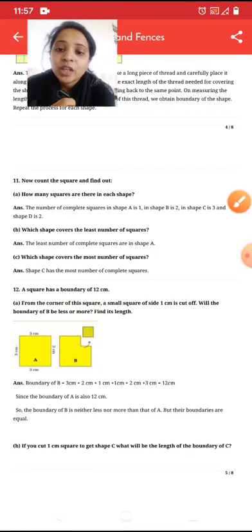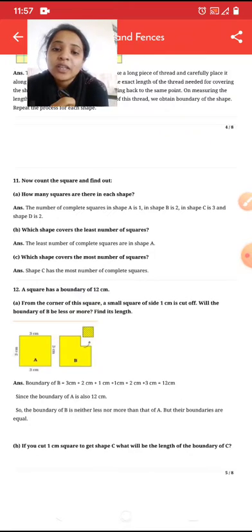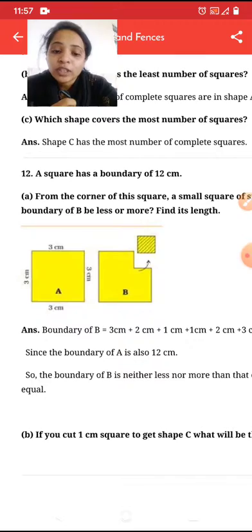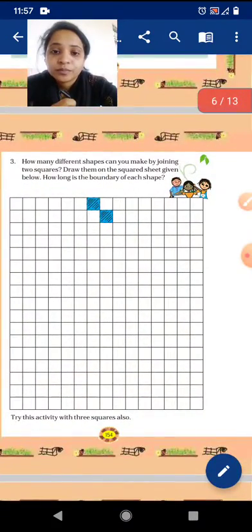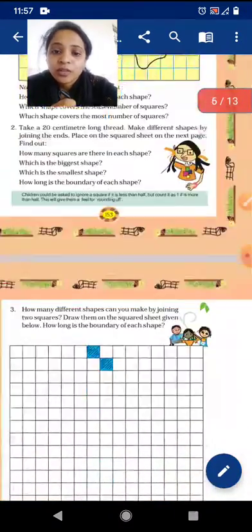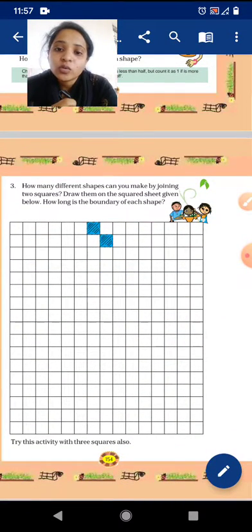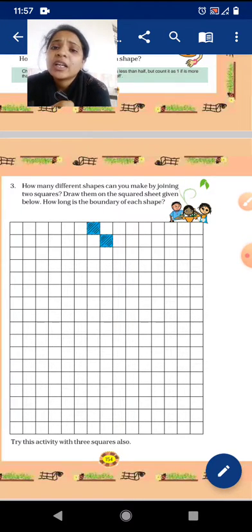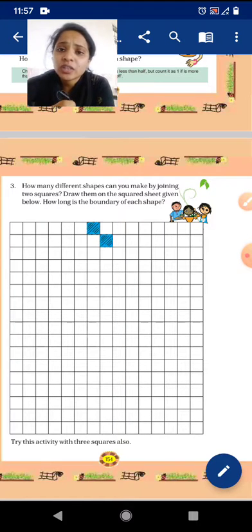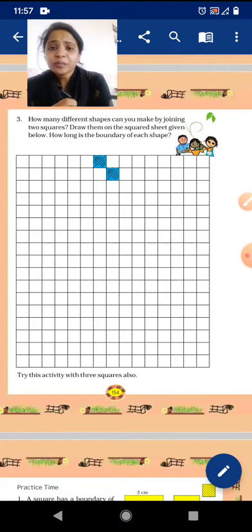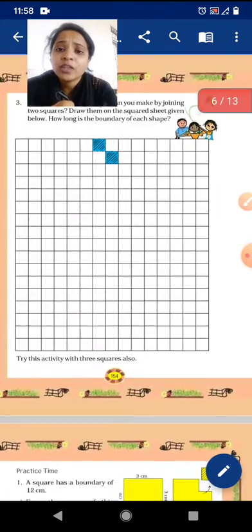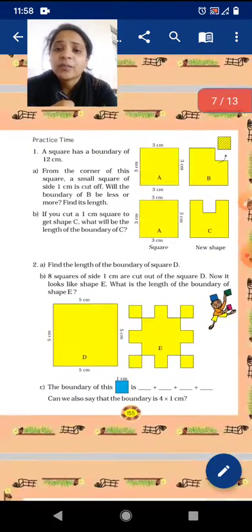So now, next question. Number 12. A square has a boundary of 12 centimeter. See, here is one square. It's having the boundary of 12 centimeter. Already we have done. See, how many different shapes can you make by joining the two squares? Draw them on the square sheet given below. How long? It's the boundary of each square. See, we have to find each square boundary. That one you can get it, then another you will get it by yourself. Why? Because each and every square is equal. And then, you can, while joining the squares, obtain an image, how many shapes you can make it by joining this. So, we are here. That's the activity. You can do it at home.